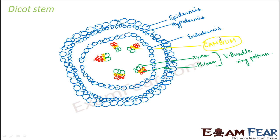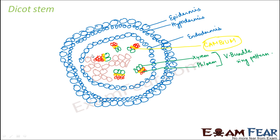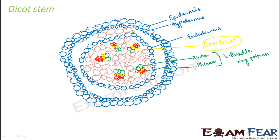Now what happens to all the open spaces present inside? Those open spaces are filled up by parenchyma cells, which are used for food storage and support. From this picture, it becomes very clear that the parenchyma cells are indeed the packing tissue — they fill up all empty space and pack everything up.